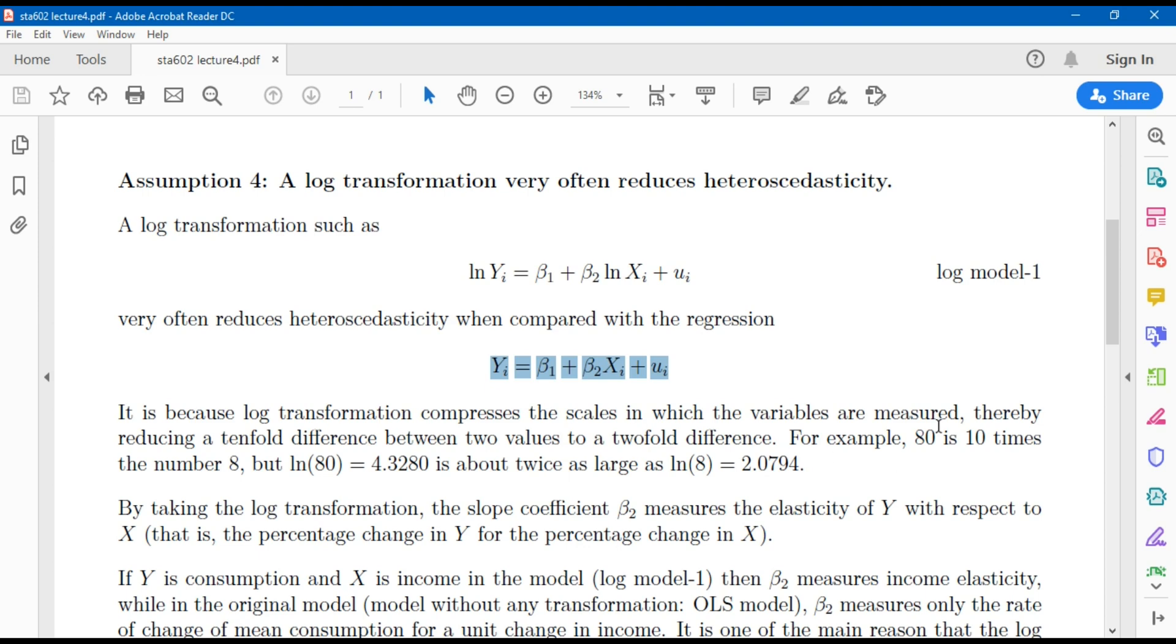For example, if we have a value of 80, taking the log reduces a tenfold difference between two values compared to a twofold difference. For example, 80 is 10 times 8, but log of 80 equals 4.328, which is twice as large as log of 8, which equals 2.0794.